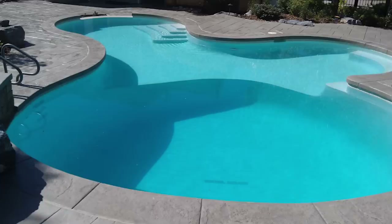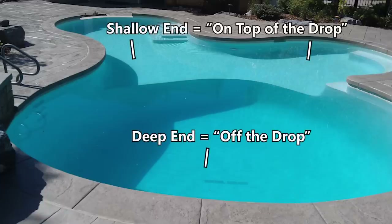I'm going to use the example of a swimming pool to explain this. You have the shallow end and the deep end of the pool. Let's say I gave you a challenge: I'll give you $10 if you can get a metal ball out of the swimming pool in 10 seconds, and I give you two options — do you want me to throw it in the shallow end or the deep end? Obviously you'd say the shallow end, because you just wade in, bend down, and pick it up. If I throw it in the deep end, you have to jump in, swim down, and try to grab it — a lot more difficult.